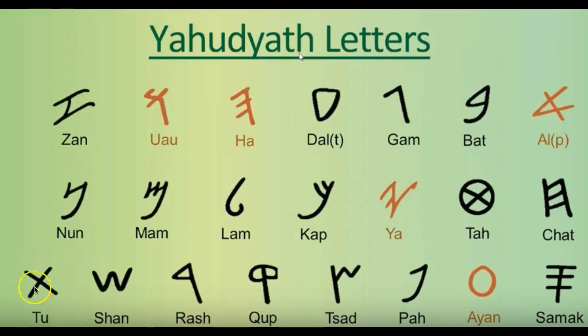When it says the Aleph and the Tau — which references Yahusha being the Al and the Thu, or the Aleph and the Tav — that's the beginning and the end, because the Al is the beginning of the alphabet while the Tu is the end of the alphabet. I'll also leave some helpful charts in the description box below so you can follow along.